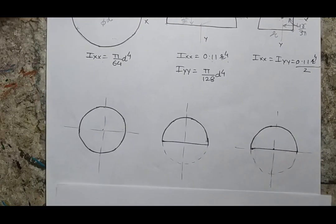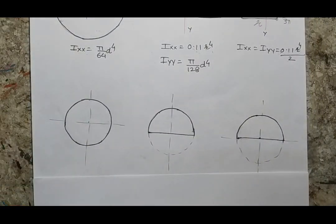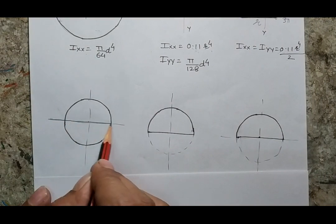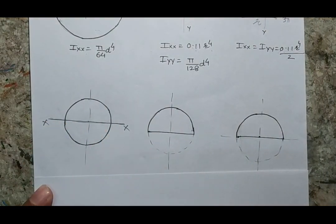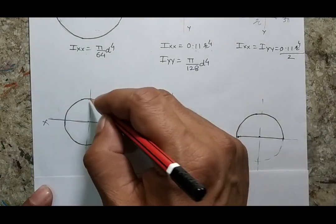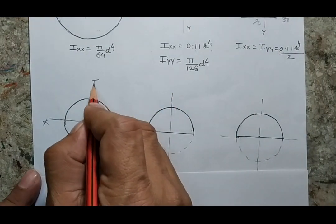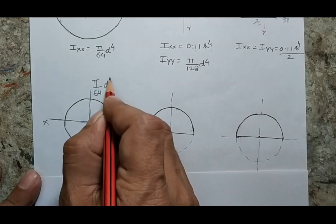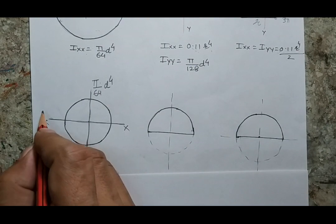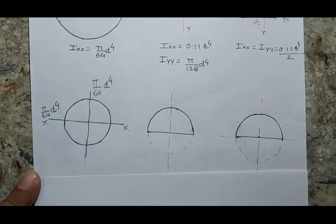Now let's consider a circle. The two centroidal axes are labeled x-x and y-y. The value of moment of area about each centroidal axis is (π/64)d⁴. So both the x-x and y-y centroidal axes give a moment of area of (π/64)d⁴.